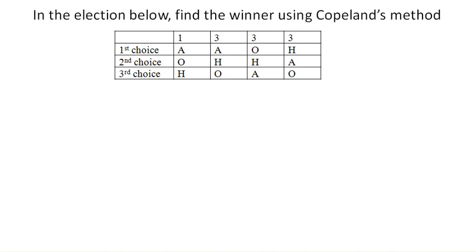So in this election, let's find the winner using Copeland's method, also called pairwise comparisons. We've actually done this before when we were looking for the Condorcet winner. This method is what's called a Condorcet method, so let's go ahead and give this a try.